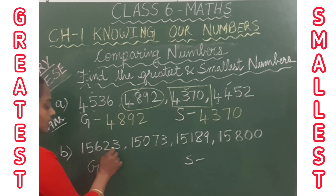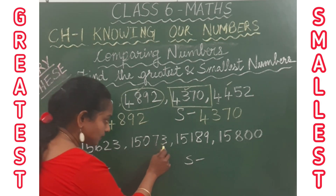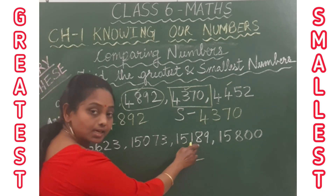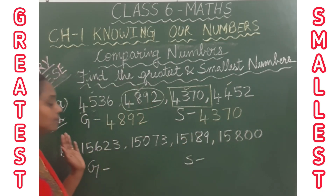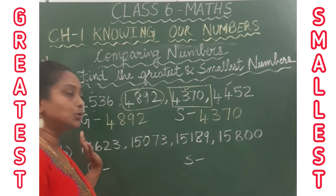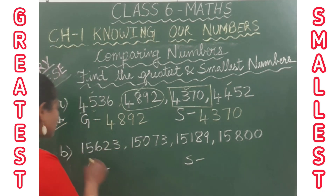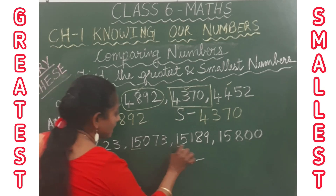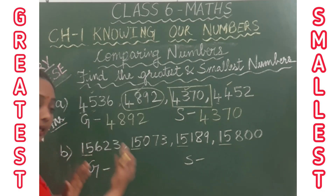Next one: 15,623; 15,073; 15,189; 15,800. The first two digits are the same for all numbers — the 10,000s place and 1,000s place are both the same. So we go straight to the hundreds place.